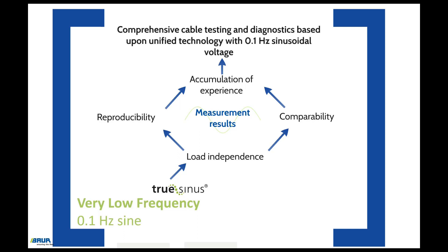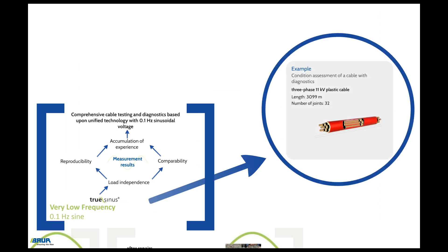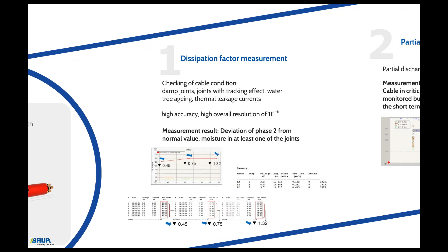Comprehensive cable testing and diagnostics is therefore based upon one unified technology with 0.1 Hz sinusoidal voltage. Let us take a look at the benefits and significance of the measurement methods based upon 0.1 Hz sinusoidal voltage using an example. The condition of a three-phase 11 kV plastic cable is to be assessed with the aid of cable diagnostics. The cable is about 3 km long and has 32 joints within this route. The dissipation factor measurement performed at the beginning supplies information on the general condition of the cable, allowing damp joints and joints subject to the tracking effect, water tree aging, or thermal leakage currents to be detected.